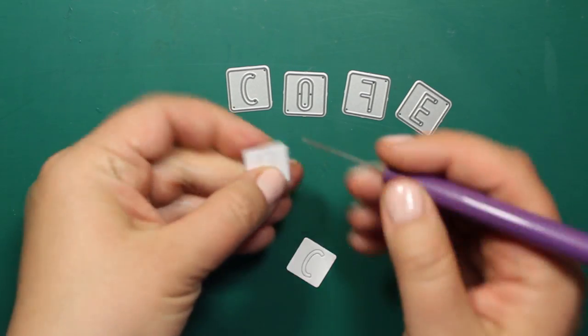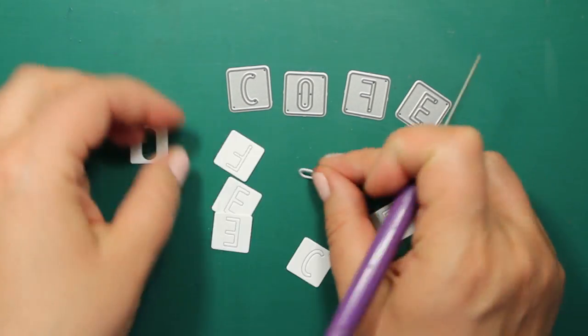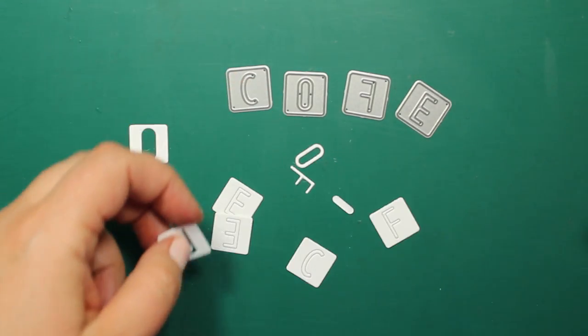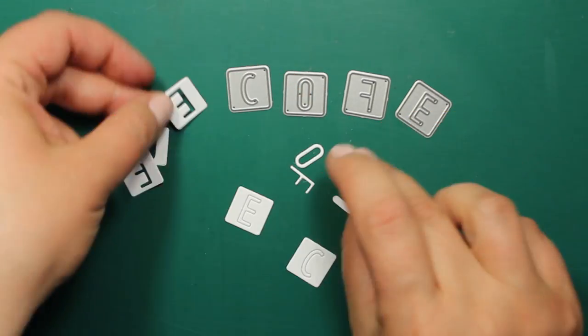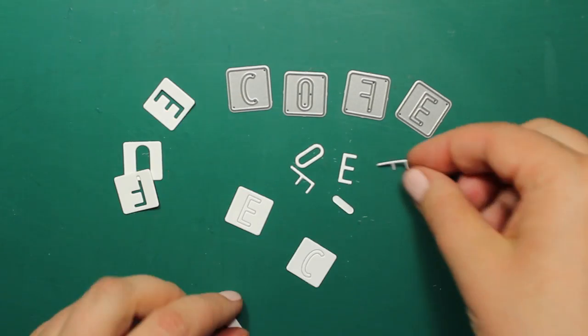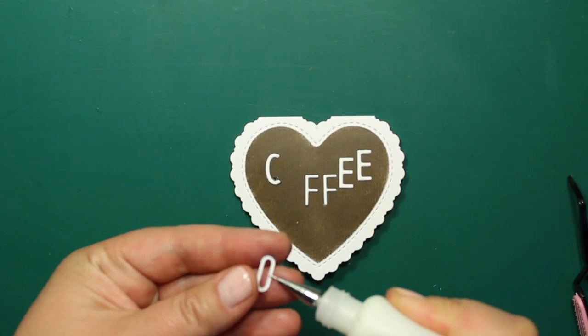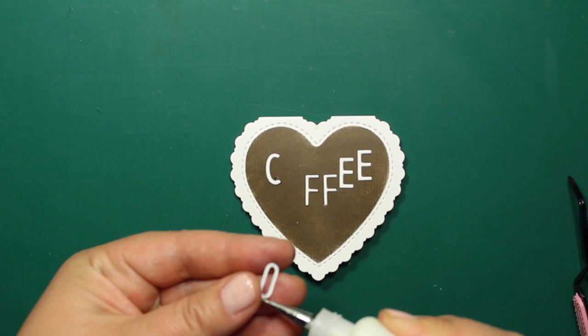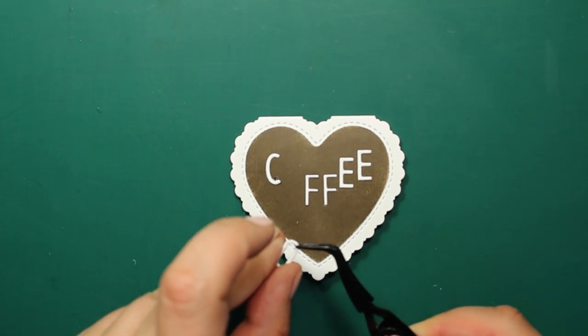I will be using the alphabet die set to spell the word coffee. This one is by Memory Box. Then I am simply sticking all the letters one by one onto the lacy heart.